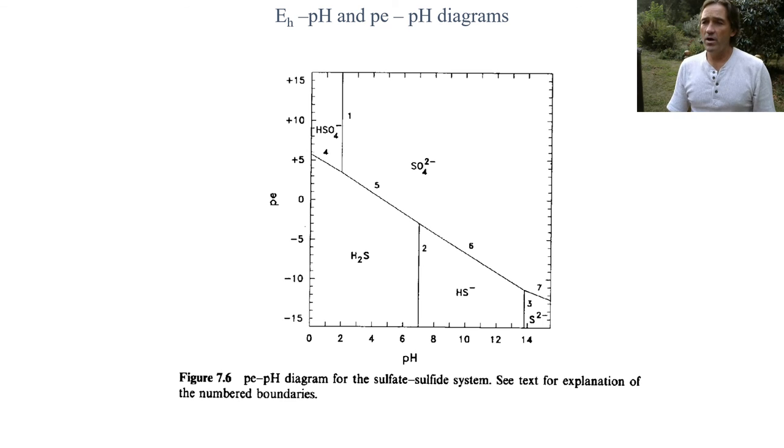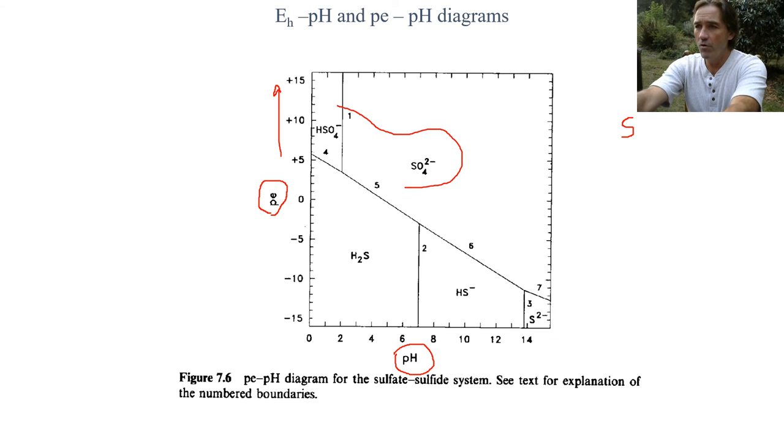This is an example of a plot that you should be able to read where we have PE now rather than EH. But again, it's a relative scale versus pH. What this plot does for sulfur, this shows you what species would be present for sulfur at a given PE and a given pH. We see at a positive PE, we see more of the sulfate species.